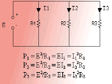In this lesson, we will discuss power relationships in parallel circuits. All the resistors in the circuit diagram shown dissipate power in the form of heat. The power dissipated in each resistor is determined by the following equations.